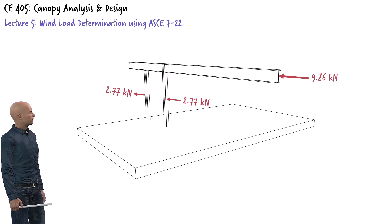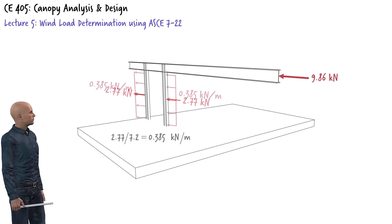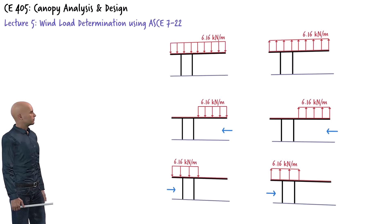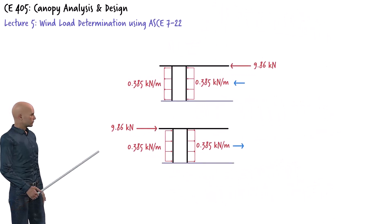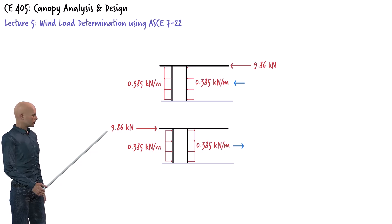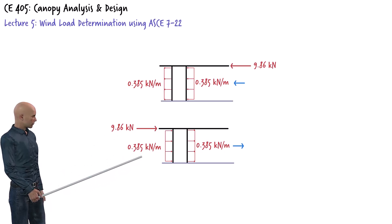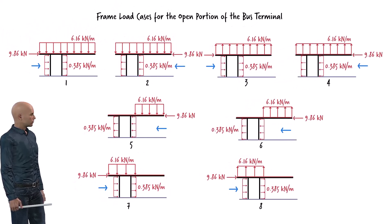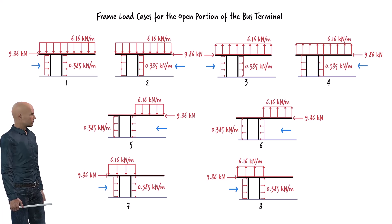Our load cases for the open part of the bus terminal are the six vertical roof loads determined before, plus the calculated horizontal loads acting on the frame: a 9.86 kilonewton horizontal point load at the top of the frame, and a uniformly distributed load of 0.385 kilonewtons per meter on each column in the direction of the wind. Because wind can come from either direction, south to north or north to south, we have two distinct loading scenarios. Combining the roof load cases with the horizontal load cases, we end up with a total of eight cases to consider in our analysis of a typical frame in the open portion of the bus terminal. In the next lecture, we will begin determining the loading scenarios for the enclosed portion of the structure.